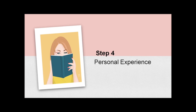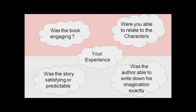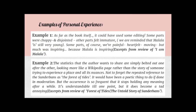Next to be written is the personal experience, which includes: was the book engaging, were you able to relate to the characters, your experience about reading the book, was the story satisfying or predictable, and was the author able to write down his imagination exactly. These two review excerpts from a different novel show that the reviewers have mentioned their personal likes and dislikes about the book by mentioning the lack of editing, immature writing, and repetition.